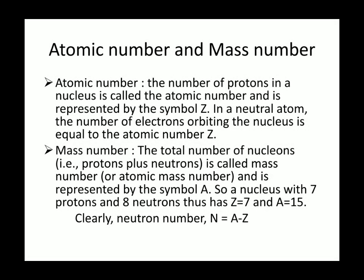A nucleus is characterized by its atomic number and atomic mass number, or simply mass number. The atomic number of a nucleus is the number of protons present inside the nucleus, and represented by the symbol capital Z. In a neutral atom, the number of electrons orbiting the nucleus is equal to the atomic number Z. And mass number is the total number of nucleons represented by the symbol capital A. So a nucleus with 7 protons and 8 neutrons thus has Z equals 7 and A equals 15. And clearly, neutron number N equals A minus Z.